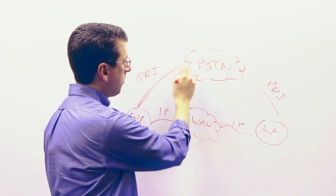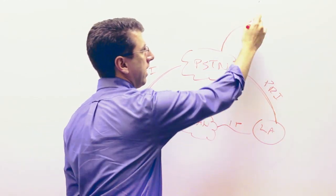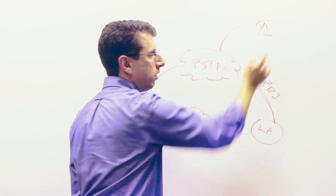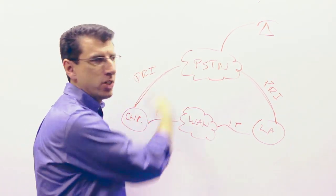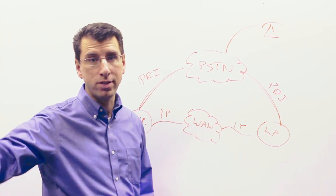So the PRI is a separate circuit basically that's going into the PSTN that then connects you to some outside phone. If Sally's calling someone or someone's calling into Joe, that's the way they get access to that outside world.